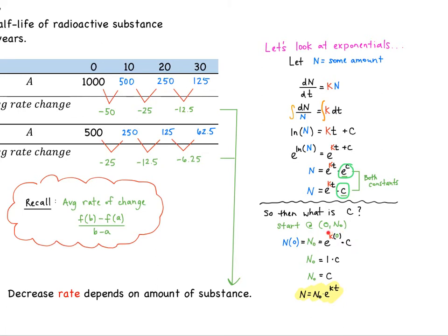What is this C value? Well, if we start at the point zero and not, our initial amount, we can plug in accordingly. N of zero equals our initial amount, which equals C to the K times zero times our constant. Anything raised to the zero power is just one times C, so we get C to be this initial amount. That leads us to our exponential equation or formula that you've probably seen many times in your science classes, or more specifically, biology when you're talking about exponential growth and decay.